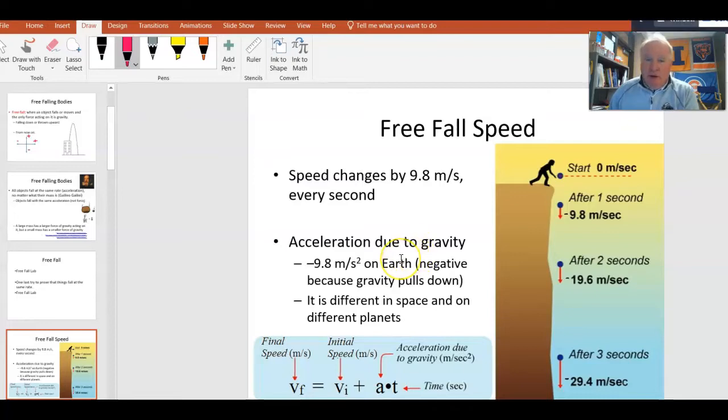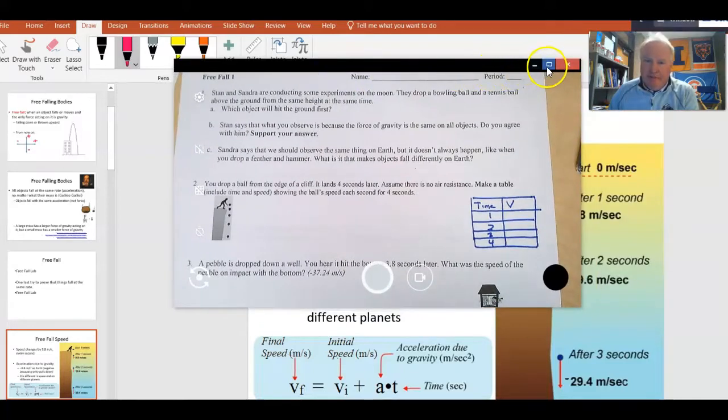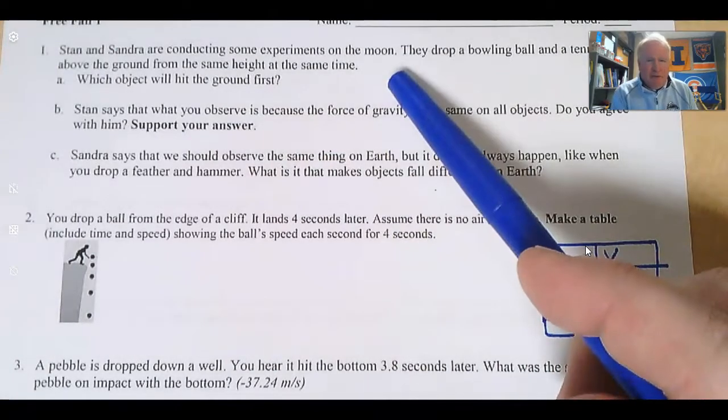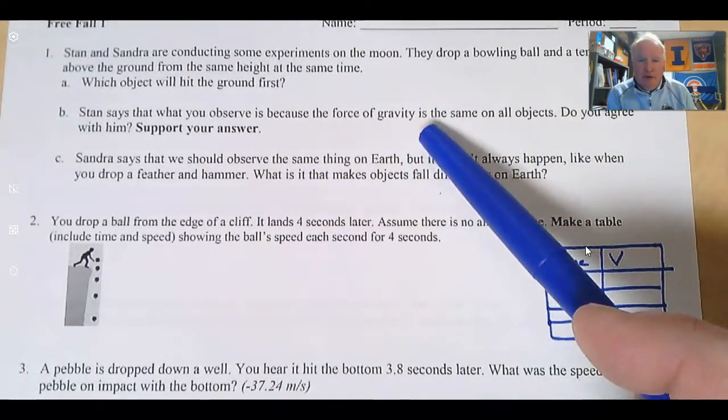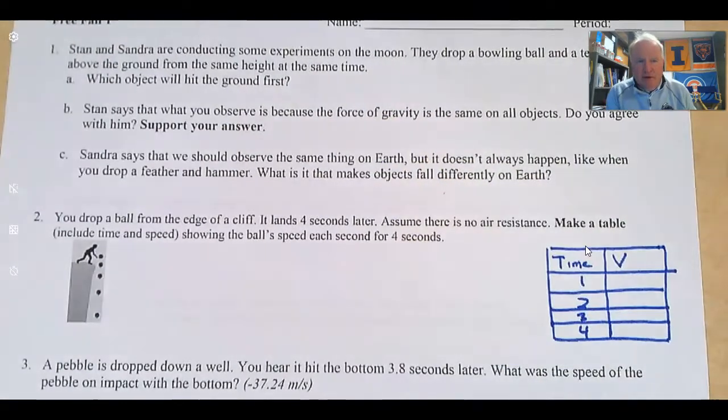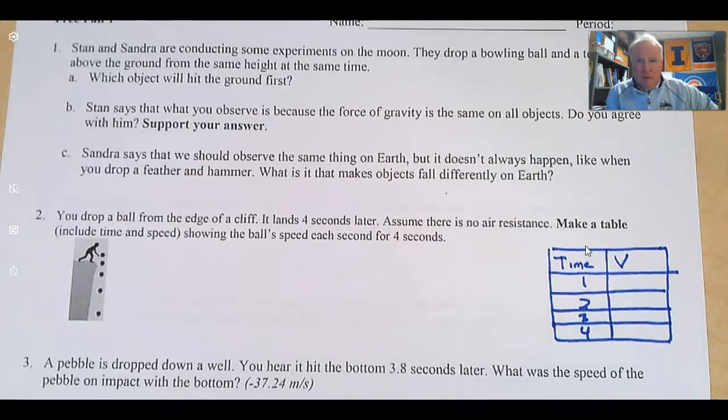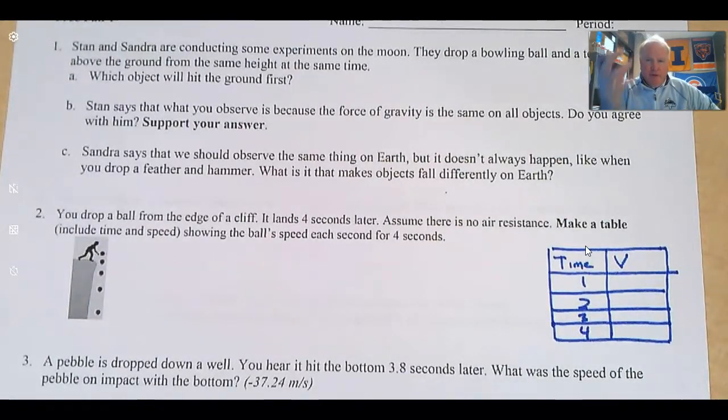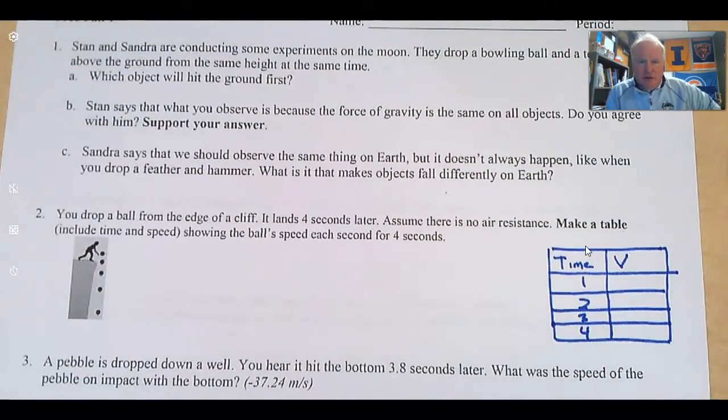Now the screen of the sheet that we were working on, we can see that this is where we left off. Most of us have done this first problem here. We had the donut challenge where it says Stan says that he observes this because the force of gravity is the same on all objects. Remember, the force of gravity is the force that pulls you down, so bigger things are heavier and the force of gravity is more on that. It's the acceleration due to gravity that's the same, and that's what creates why things fall at the same rate.